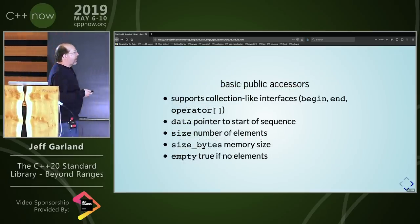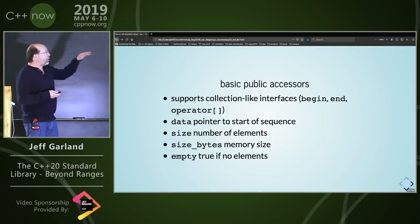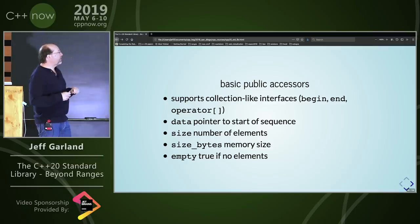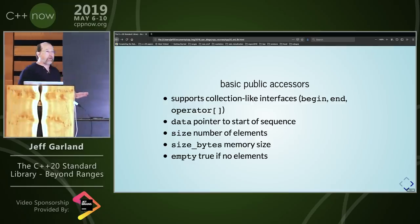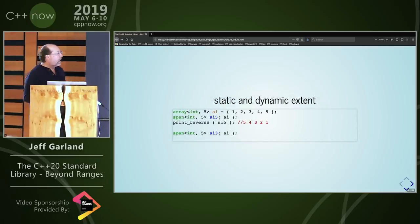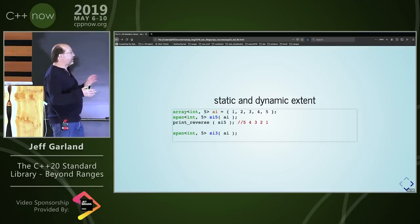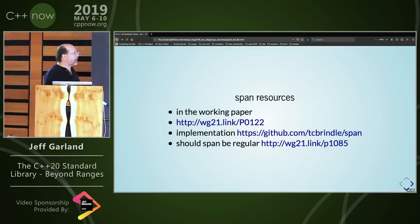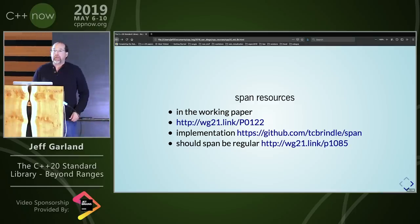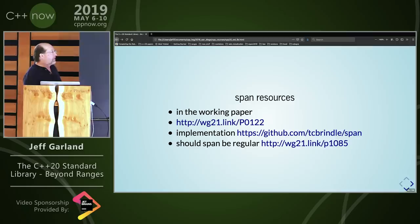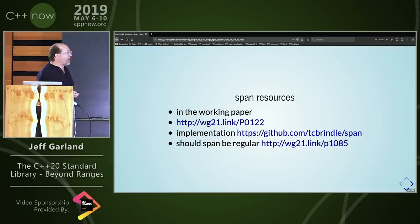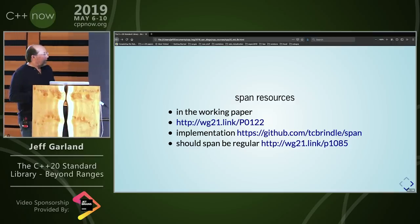Span is a big class with a lot of functions. It supports begin/end interfaces, operator[], data, size, empty, and a whole array of other things. On constness: the constructor for span takes collections by non-const, implying the underlying collection is modifiable. If you want to prevent mutation, you might be able to say span<const int> — but it's worth trying. There was a tremendous amount of debate about span across many meetings about its nature, whether it should be regular, what size returns, etc.